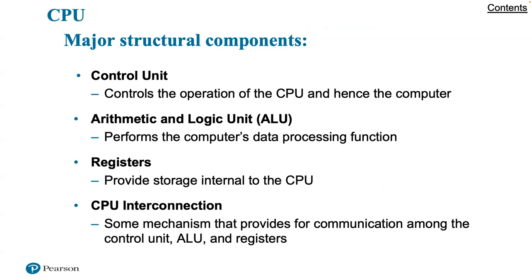The central processing unit has four key components. The control unit controls the operation of the CPU and hence controls the whole computer. The arithmetic and logic unit, or ALU, performs the computer's data processing function. Registers store internal information in the CPU — there are various types. And finally, the CPU interconnections provide the mechanism for communication among the control unit, the ALU, and the registers.